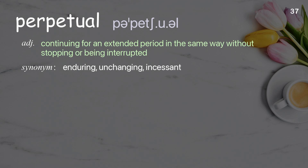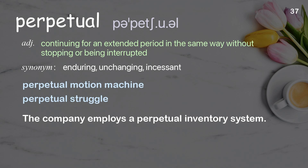Perpetual. Continuing for an extended period in the same way without stopping or being interrupted. Examples: perpetual motion machine; perpetual struggle. The company employs a perpetual inventory system.